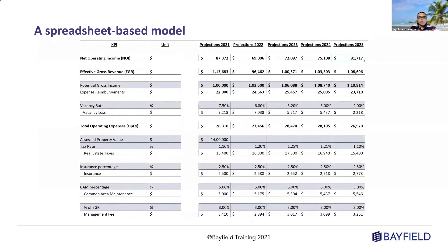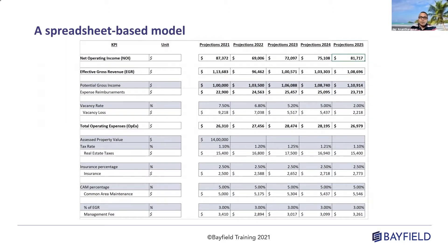We all know how a spreadsheet model looks like. Once I have a model, I'm going to have net operating income, revenue items, and expense items. I'll come up with my own assumptions and project it for five years. If I want to change an assumption for 2023, I'll make changes and the net operating income will update automatically. But a lot of times this is not very visual, and when you're making a lot of changes, it's not easy to understand what impacted the outcome most. It's also much harder to compare two or three different scenarios.